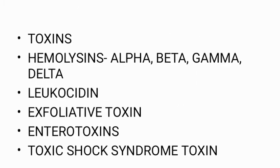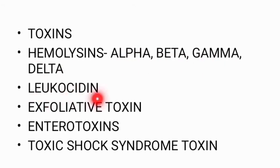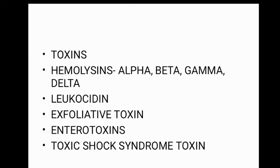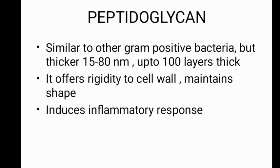The toxins released by Staphylococcus aureus include hemolysins (alpha, beta, gamma, and delta), leucocidin (Panton-Valentine toxin), exfoliative toxins, enterotoxins, and toxic shock syndrome toxin. Extracellular enzymes include coagulase, heat-stable thermonuclease, deoxyribonuclease, lipase, proteases, and others. We will now discuss each of these one by one.